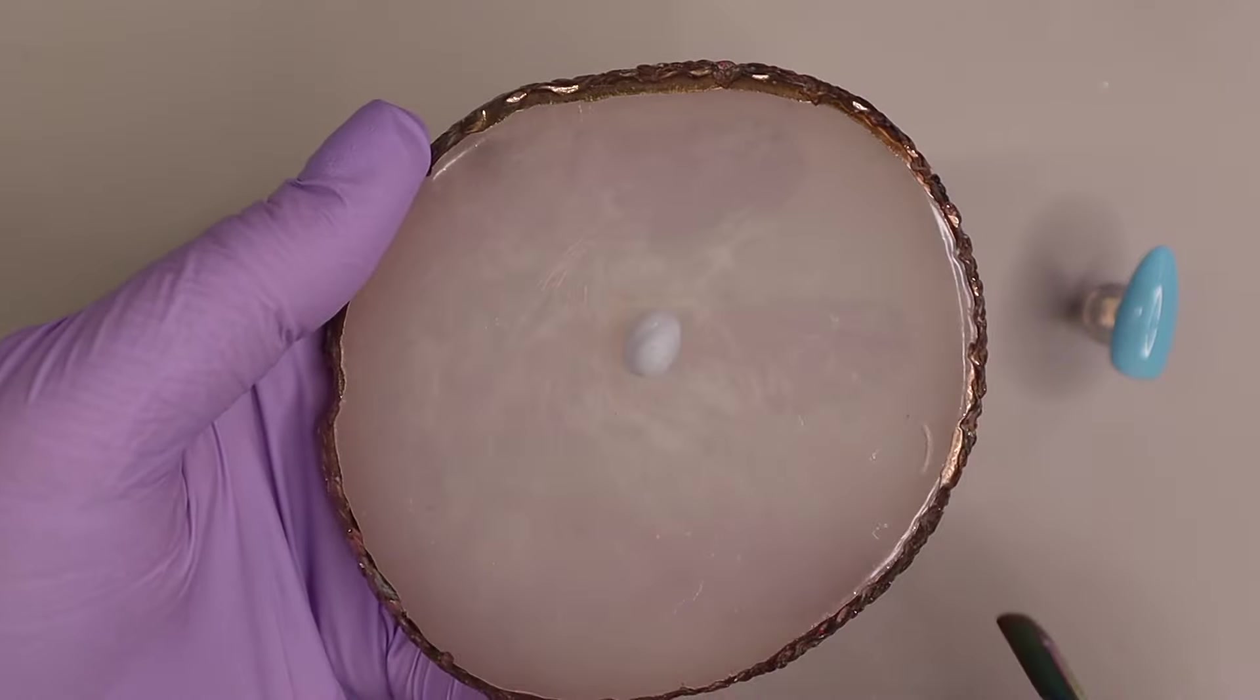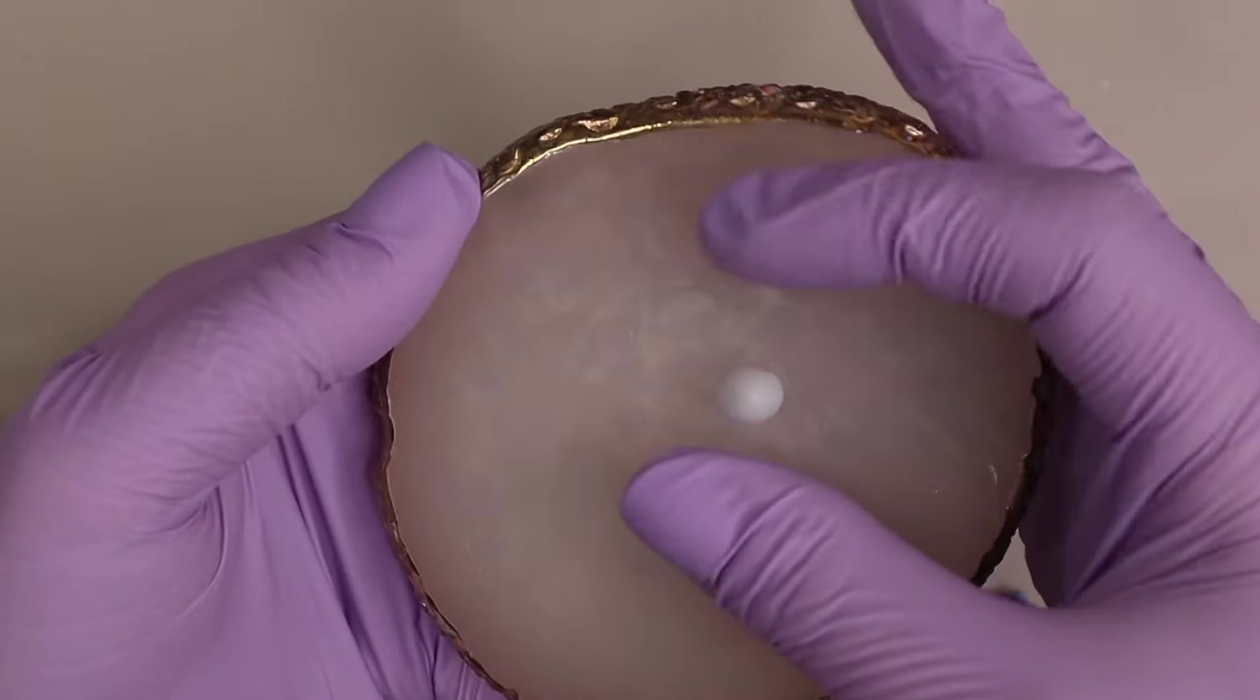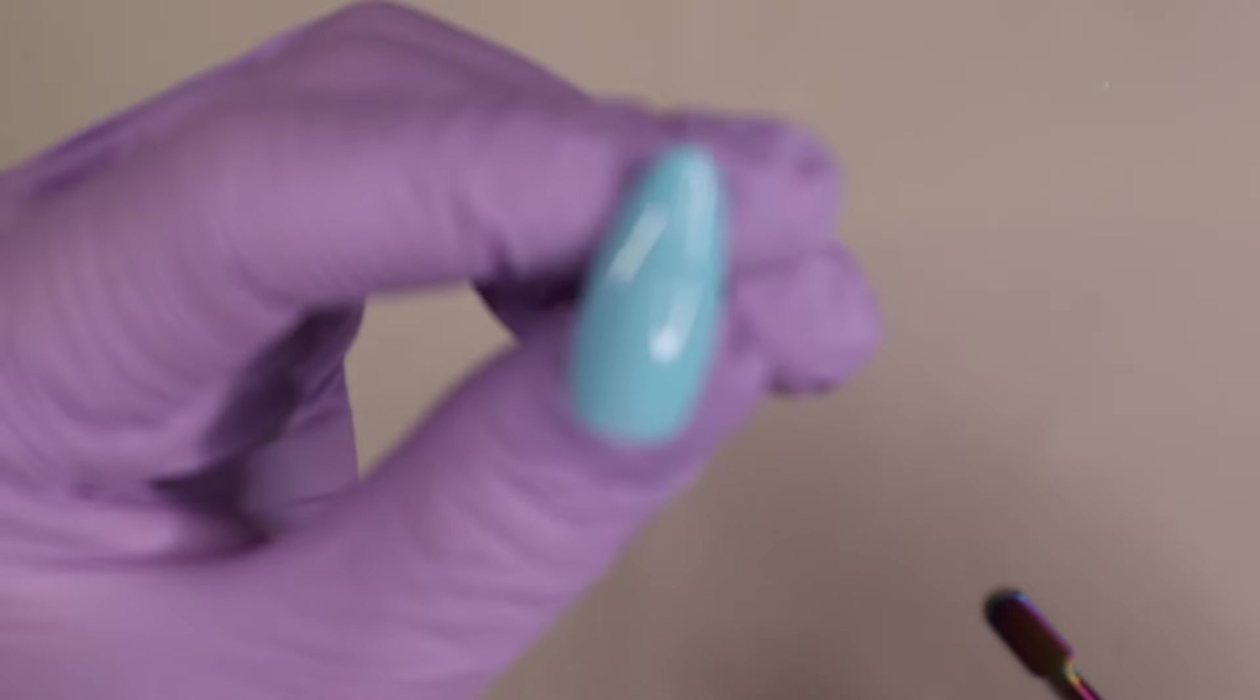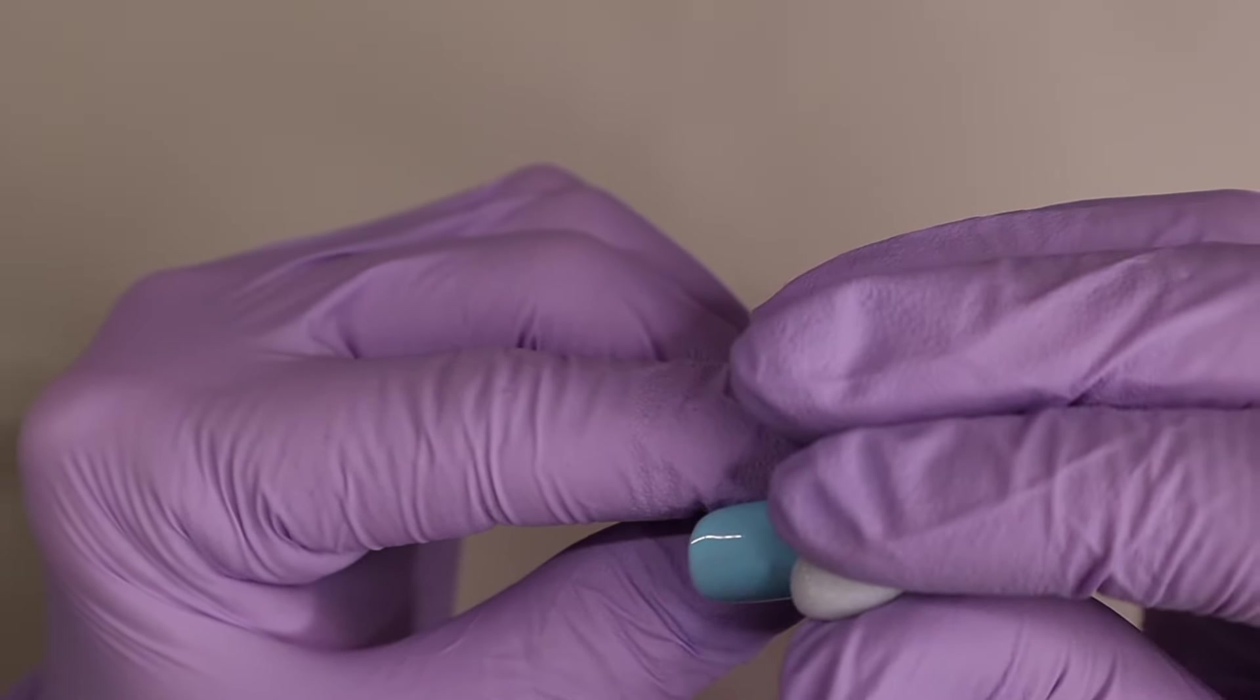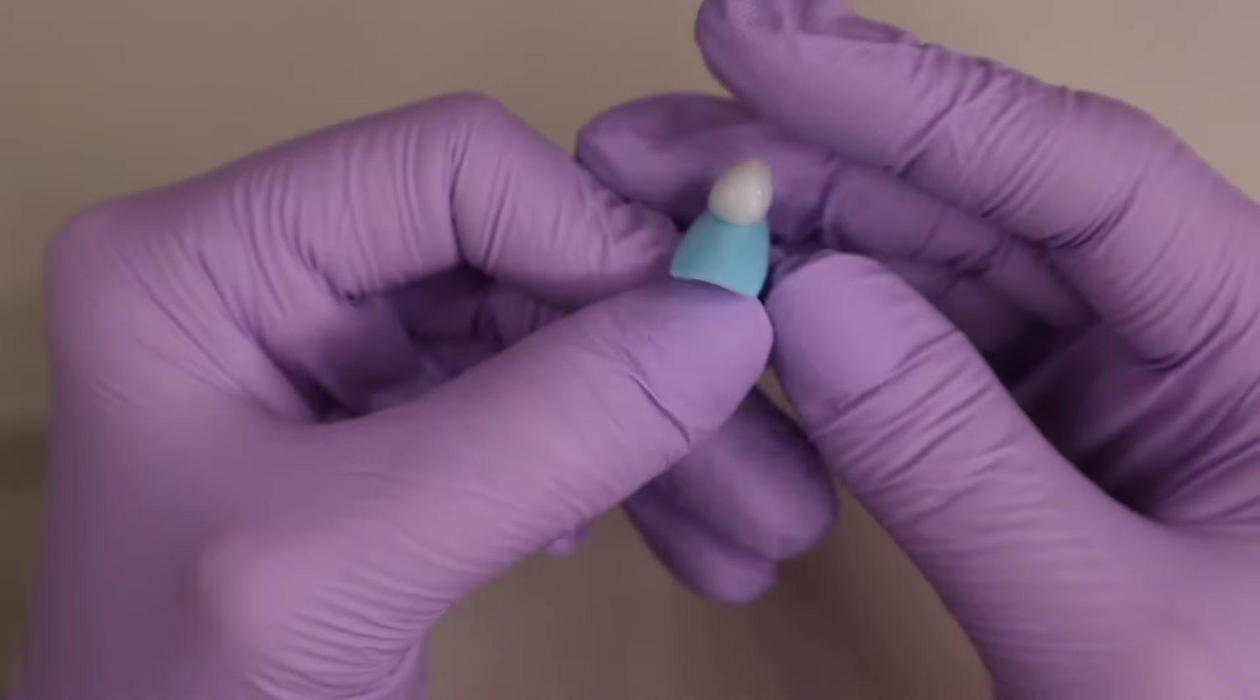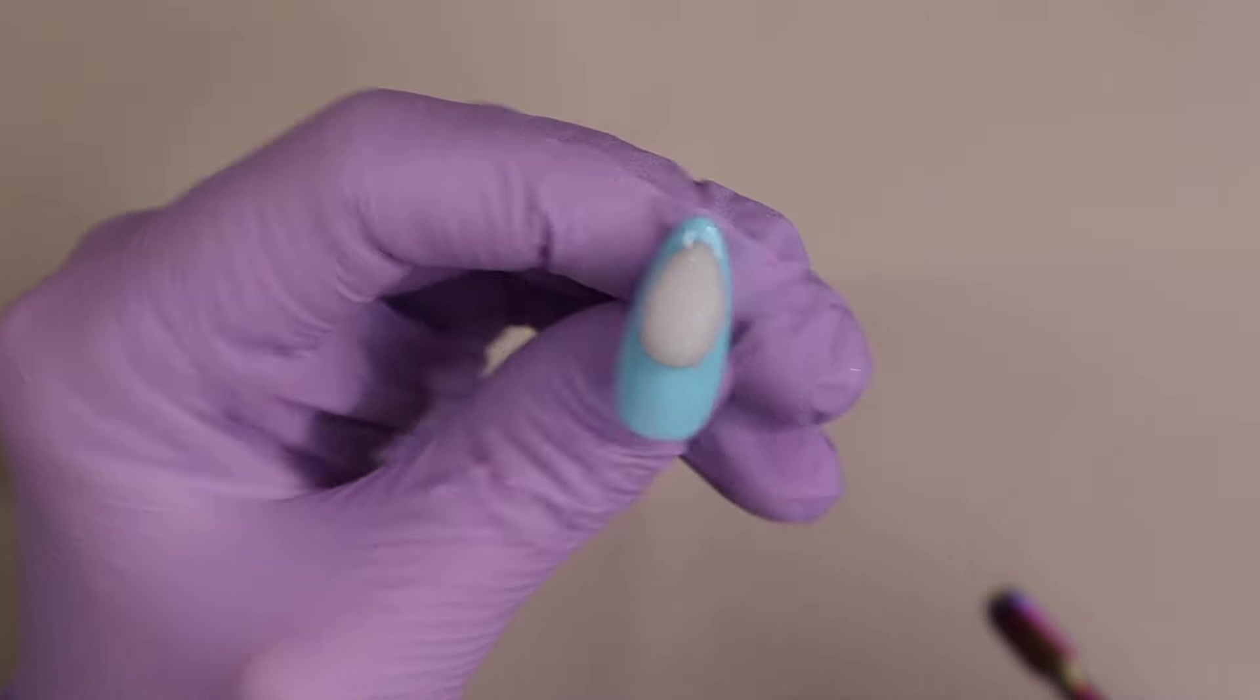I just scooped out as much as I thought I would need for the little cotton candy and then I pulled out my mixing palette and just rolled that gel into a little ball and then kind of tapered it a little bit with my fingers to make the molding and sculpting process a little bit easier. Then I just set it on the nail.